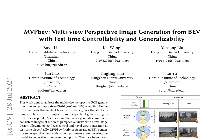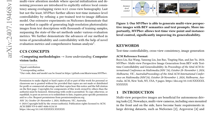The two-stage design consists of a projection module that maps BEV semantics to perspective views with camera parameters, allowing the model to generalize to unseen viewpoints. This is followed by a multi-view attention module, which enforces local consistency among overlapping views through cross-view homography via special initialization and denoising processes. MVPBEV achieves test-time instance-level controllability by refining a pre-trained text-to-image diffusion model, enabling generation of high-resolution, photorealistic images from text descriptions, even with thousands of training samples.